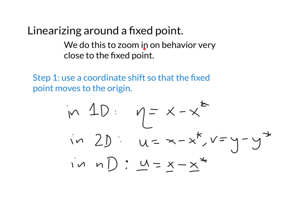We're doing this to zoom in on behavior very close to the fixed point, and my first step is to use a coordinate shift. The fixed point might be over at 3,3 or 7,1, and I'm just going to use a coordinate shift so that the fixed point moves to the origin. That way all my analyses are done around the origin and I'm close to my fixed point when my coordinate is small.